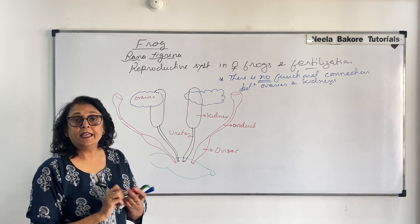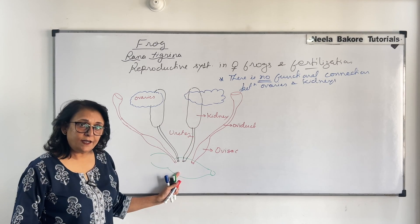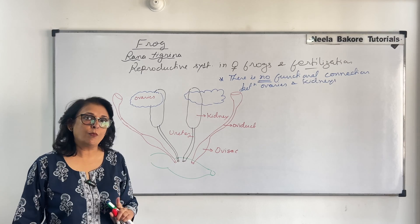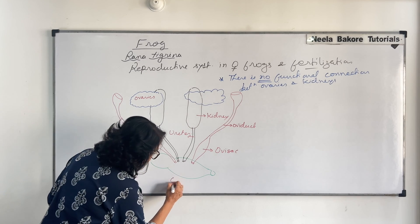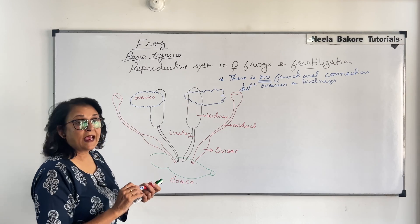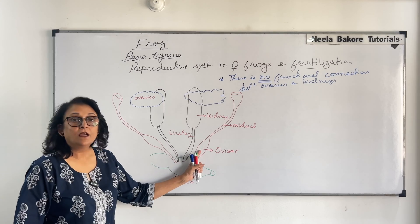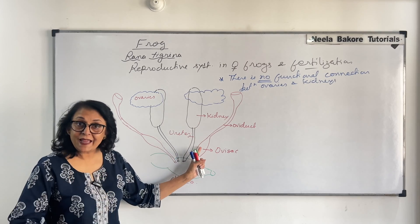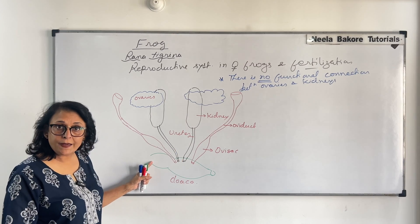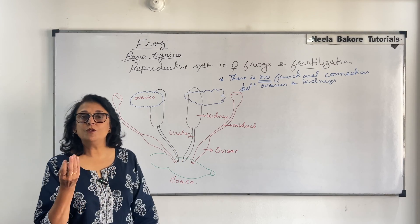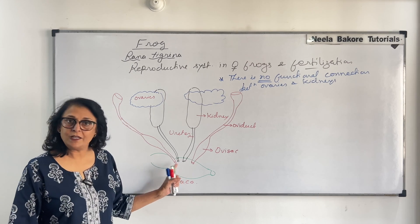In female frogs, the ureters open separately into the cloaca and the oviducts also open separately into the cloaca. The cloaca receives inputs from three separate systems: the reproductive system (eggs), the urinary system (urine), and the digestive system (rectum). All three open into this sac-like structure called the cloaca.